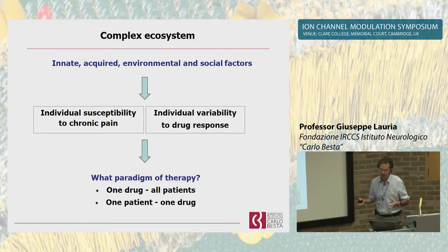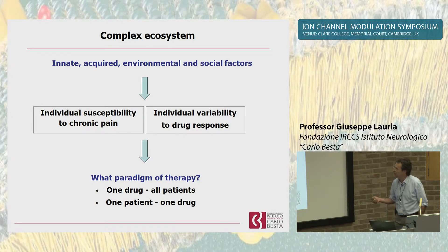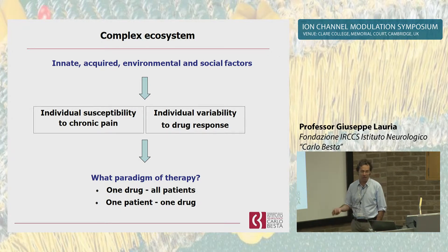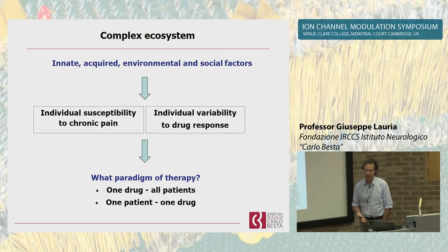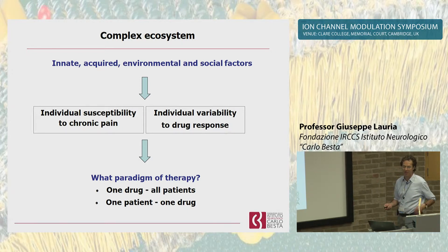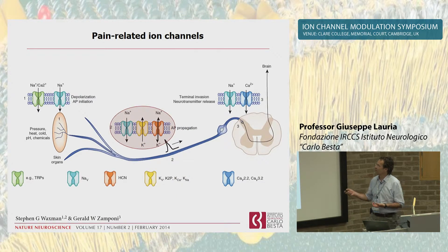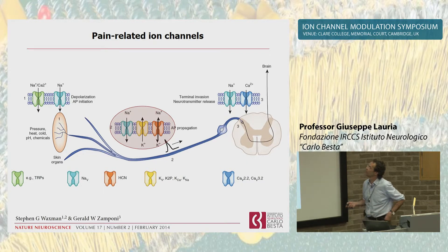This is a very complex ecosystem in which a large number of innate and acquired factors can influence individual susceptibility to pain and individual variability in pain response. So what is the paradigm of therapy we have to deal with in the near future? One drug for all patients, or one patient, one drug? It's a quite tough question - I don't have the answer, but this is the reason why I think we are here.